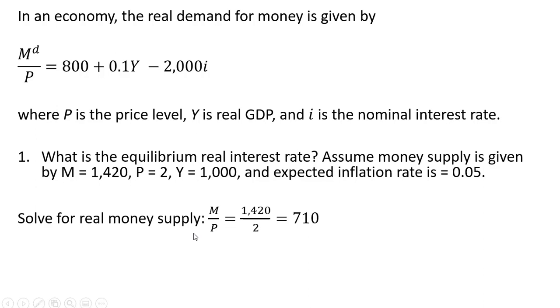So we want to solve for the real money supply, which is going to be 1,420 divided by the price level, or 710. Then we're going to set the real money supply, 710, equal to the demand, real money demand. So doing that, setting those two equations equal.